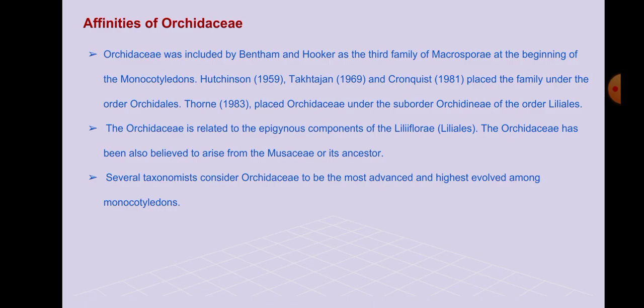Affinities of the Orchidaceae: Orchidaceae was included by Bentham and Hooker as the third family of the Microspermae at the beginning of the Monocotyledons. Hutchinson (1959), Takhtajan (1969), and Cronquist (1981) place the family under the Order Orchidales. Thorne (1983) places Orchidaceae under the suborder Orchidineae of the Order Liliales. The Orchidaceae is related to the Iridaceae components of the Liliiflorae.